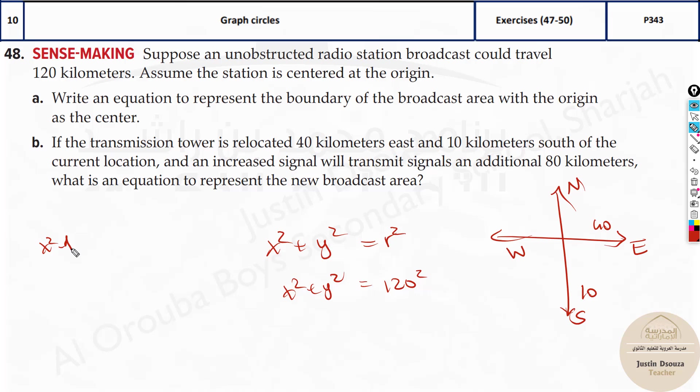Now, we have to use (x - h)² + (y - k)² = r². And an increased signal will transmit signals an additional 80 kilometers. What is the equation that represents the new broadcast area? All you need to write is x minus, what happens with horizontal direction? It goes to the right. It's plus 40. Now, here it goes down. It's minus 10. Minus and minus will become plus here whole square.